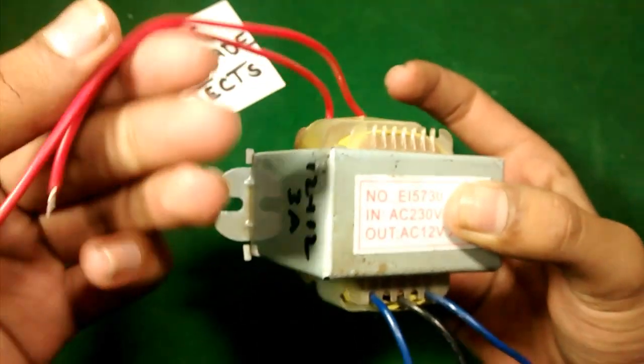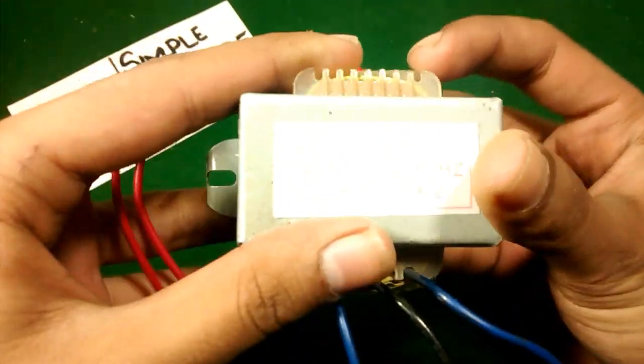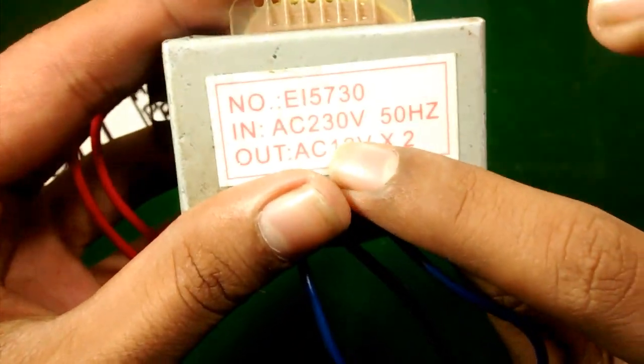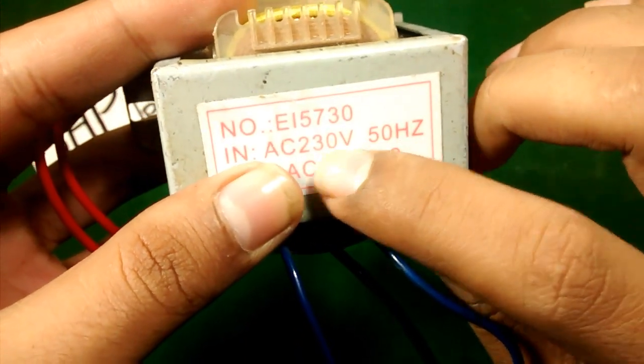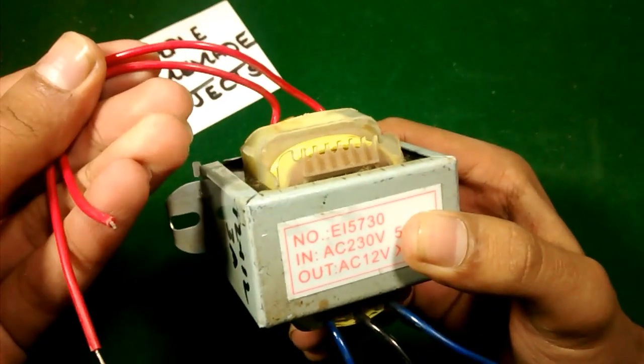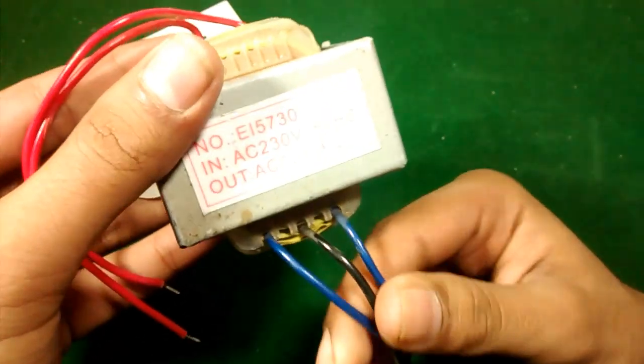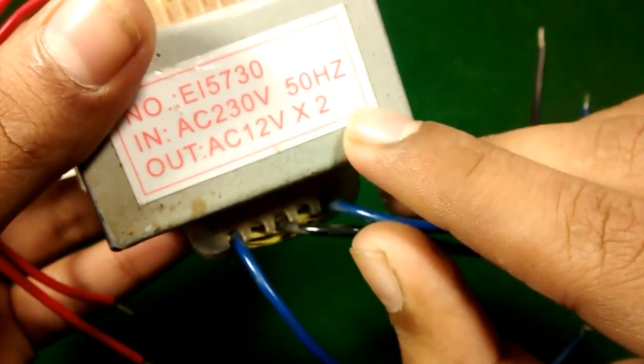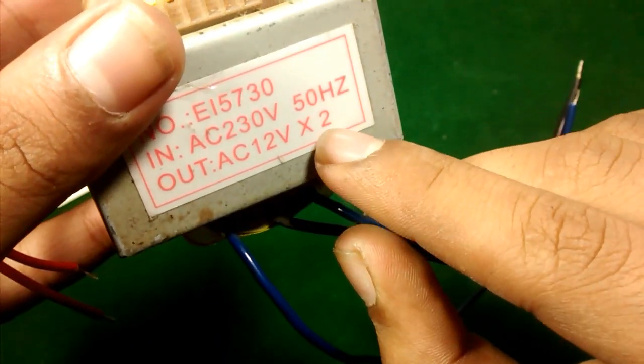These two wires are for the input. In my country 220 volt is used, and here it is 230 volt. For this wire and the output, you can see AC 12 volt and two coils.